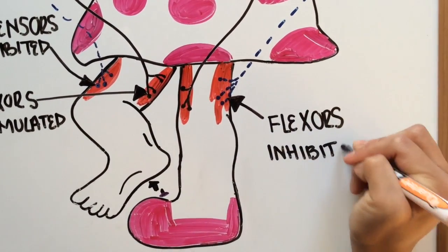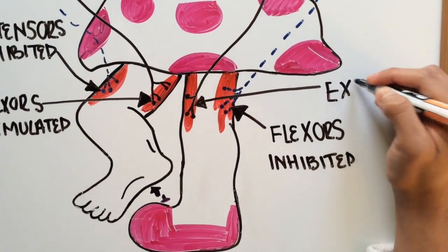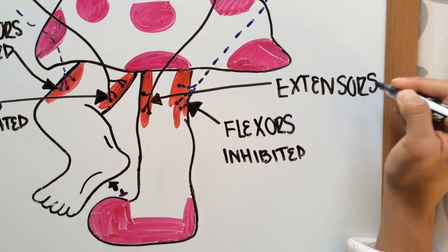This is the flexor inhibited muscle and the anterior one is the extensor stimulated.